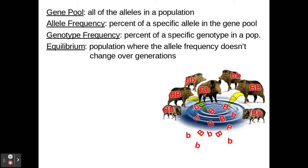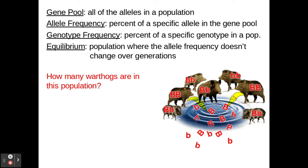Allele frequency is the percent of a specific allele in the gene pool — how many of the alleles are dominant, how many are recessive. Genotype frequency is the percent of a specific genotype in a population: how many are heterozygous, homozygous recessive, or homozygous dominant. Equilibrium is when a population is not experiencing evolution — they're staying consistent over time, the opposite of evolution. For these examples, we're going to calculate how alleles are changing over time to show that a population is evolving.